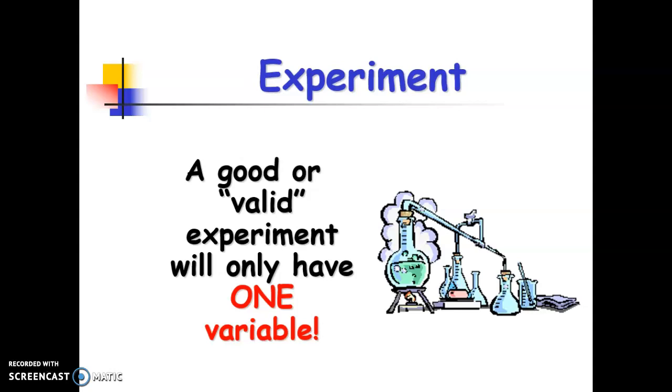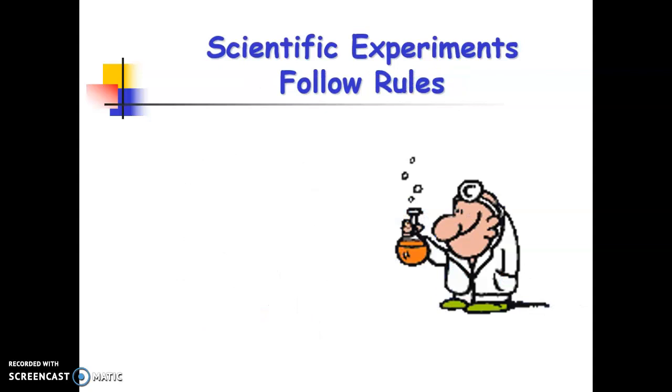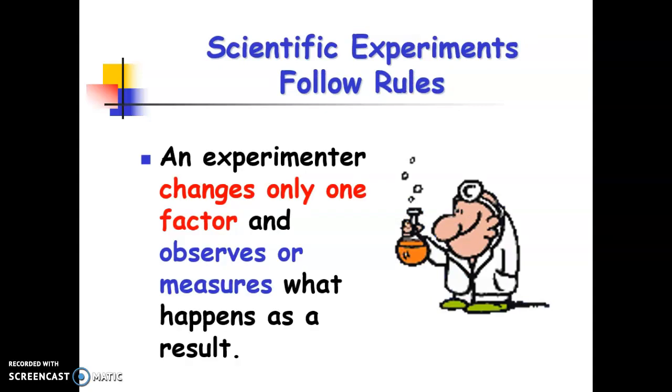Valid experiments have just one variable, so we can ensure that that variable is what is causing the result. If we have more than one variable, then we can't prove that one specific variable or factor has caused the result. So as we are running our experiment, we are looking at that one factor that has been changed and then making observations and measurements to see what impact that will have or what results.